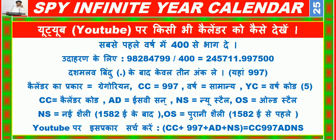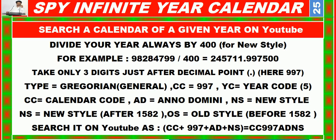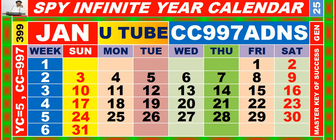Way to search the calendar of a given year on YouTube in Hindi. Way to search the calendar of a given year on YouTube in English. Calendar for the month of January having calendar code equal to 997.